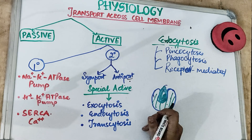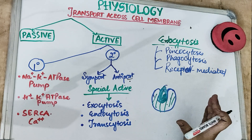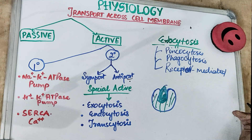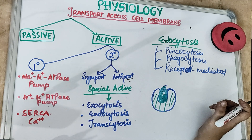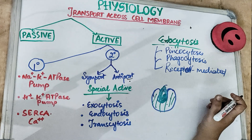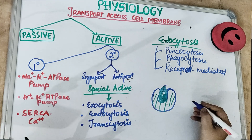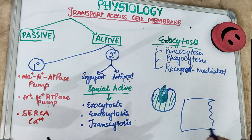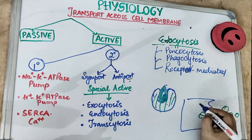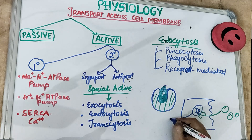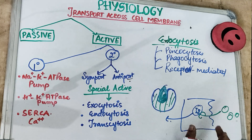Transcytosis, or vesicle trafficking or cytopempsis, is when a substance passes through a cell without staying inside it. The receptor molecule caveolin is used for transport of vitamins in endothelial cells and for absorption of nutrients. For example, immunoglobulins present outside enter the cell in the form of vesicles via the endothelium and pass out the other side — this is transcytosis.